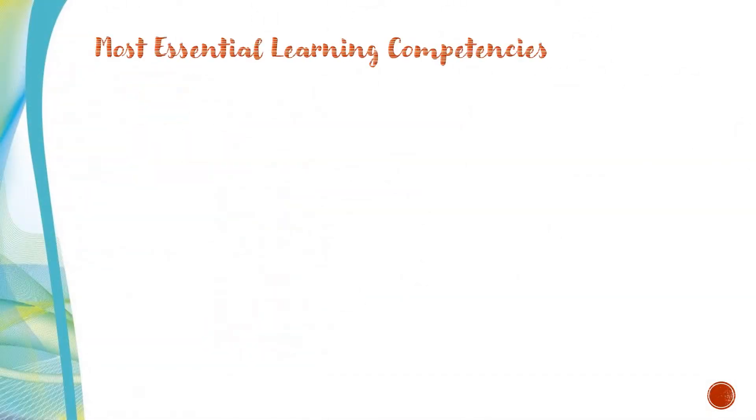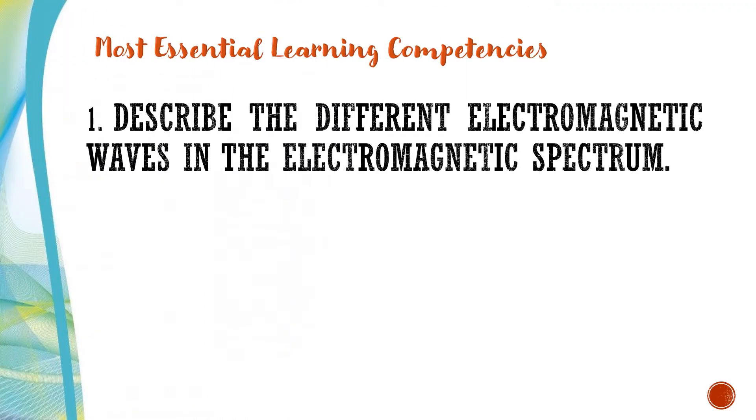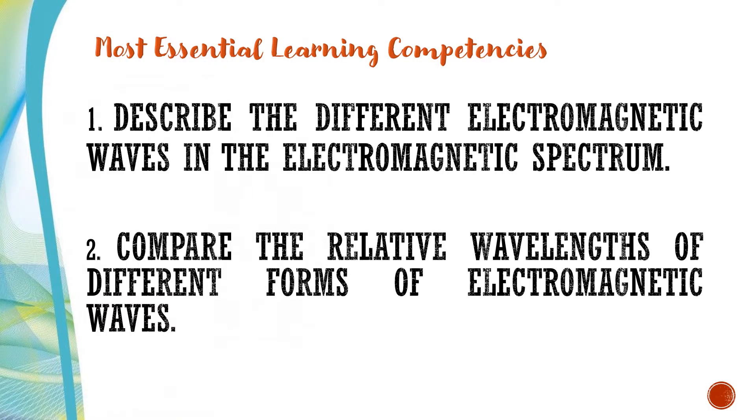For our most essential learning competencies, number one, describe the different electromagnetic waves in the electromagnetic spectrum. And compare the relative wavelengths of different forms of electromagnetic waves.